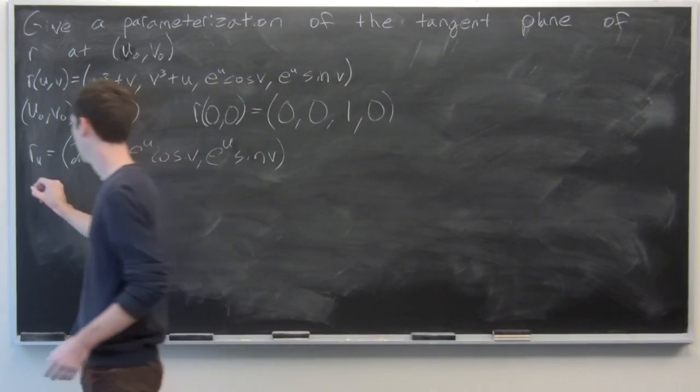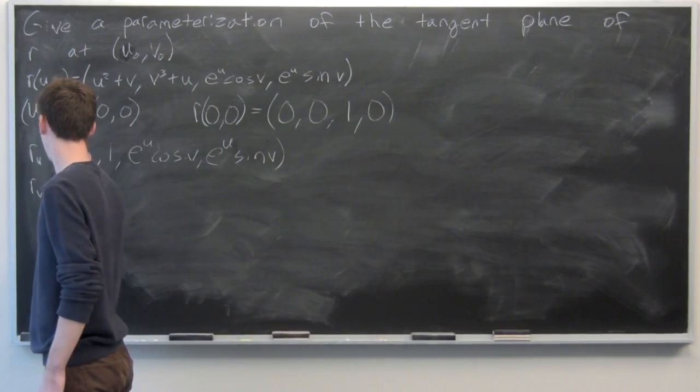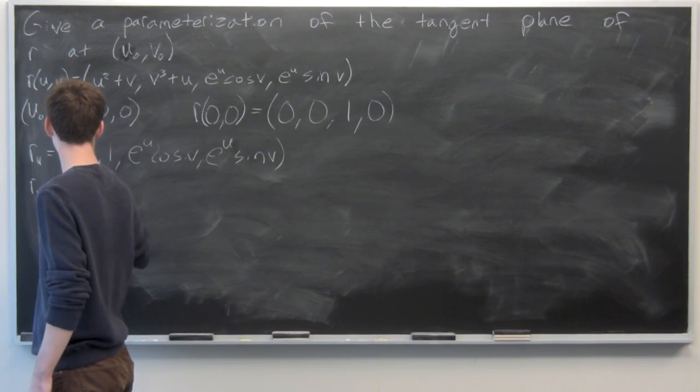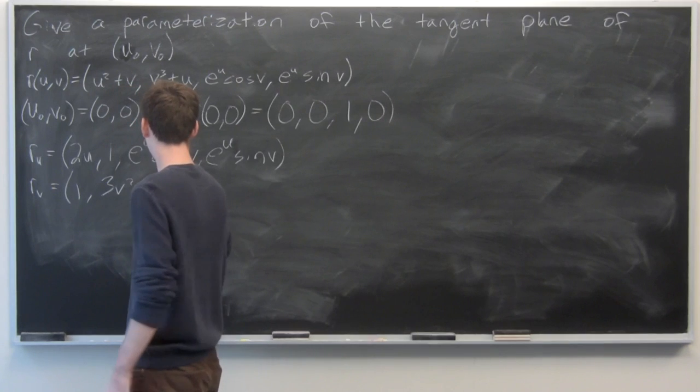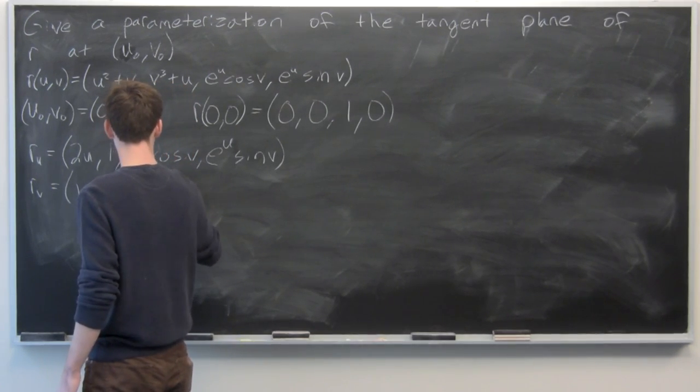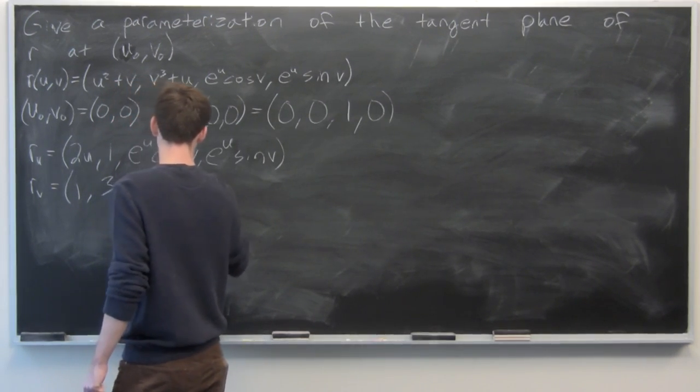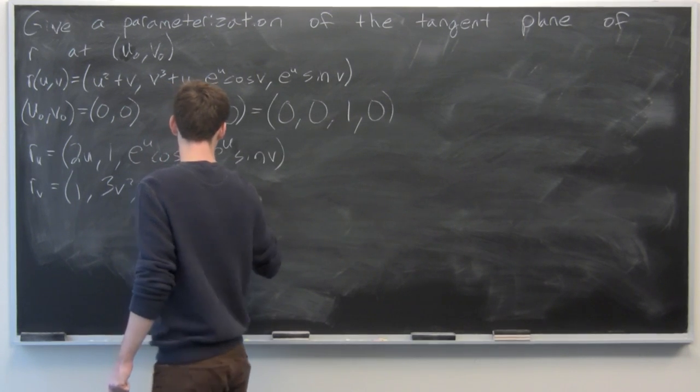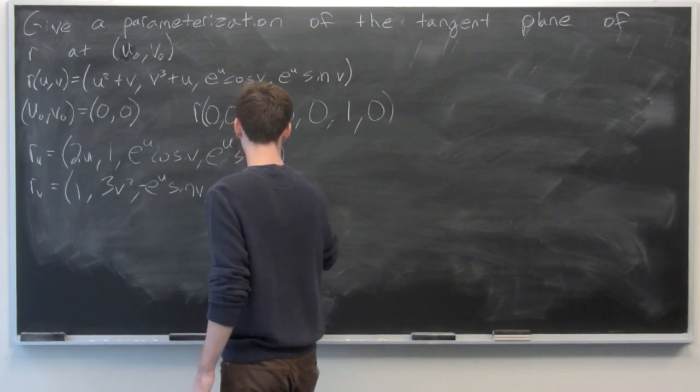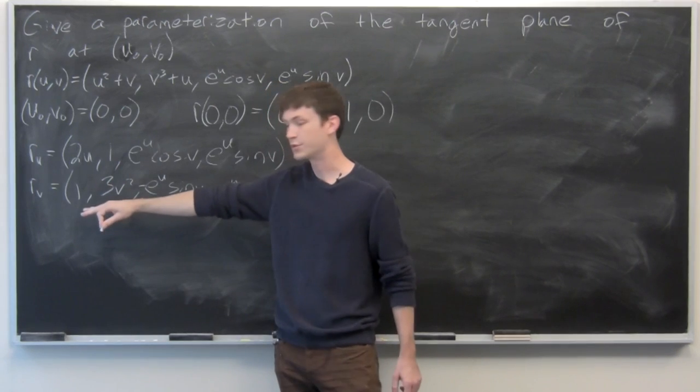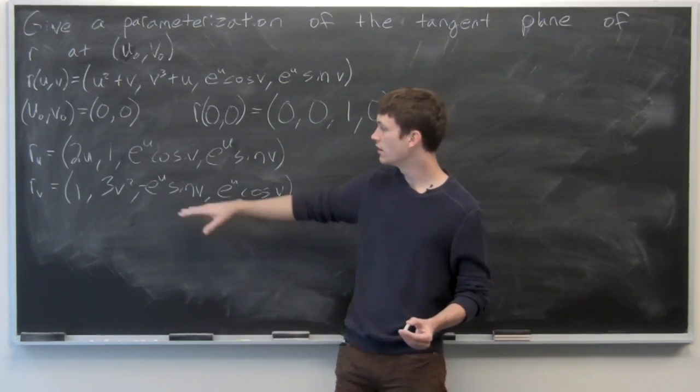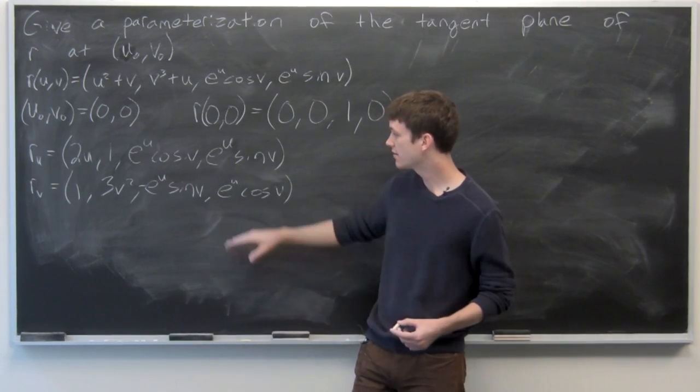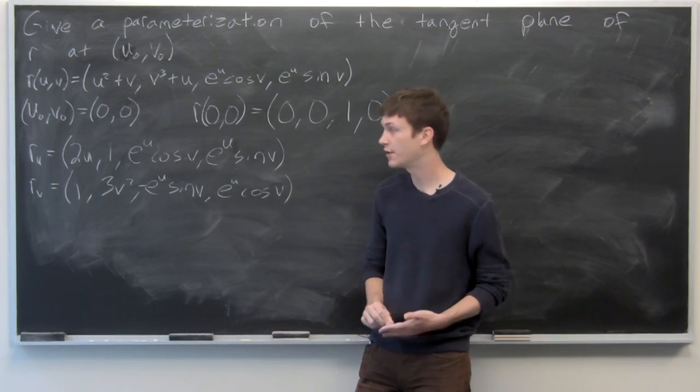The partial derivative with respect to v is rᵥ = (1, 3v², -e^u sin(v), e^u cos(v)).